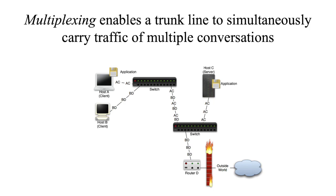The final comment here is about multiplexing. With a trunk line, people are sharing their time on the trunk line, or sharing the capacity of the trunk line. Multiplexing is what enables a trunk line to do that — we're simultaneously carrying the traffic of multiple conversations on a single trunk line. So host A talking to host C and host B talking to host D may share the trunk line. On the access line, hosts have exclusive use of their own access line, but between switches they share the space. Multiplexing does that.